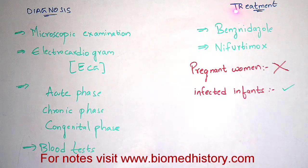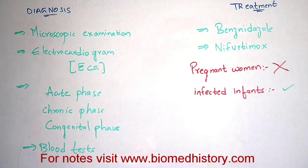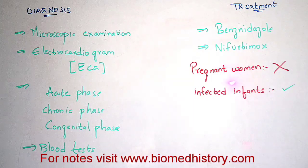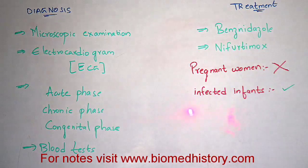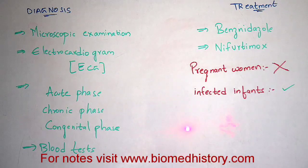Coming to the treatment, Benznidazole and Nifurtimox are the drugs given to a person infected with Chagas disease. One important thing to remember is that pregnant women should not consume either Benznidazole or Nifurtimox, because if she consumes them, the infant growing in her womb will die. However, infected newborn babies can take these drugs, as the disease can be seen in newborn babies.